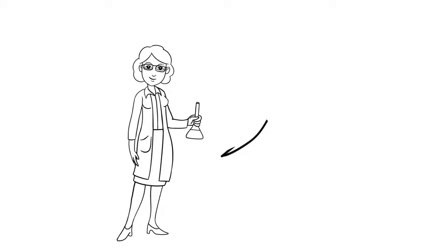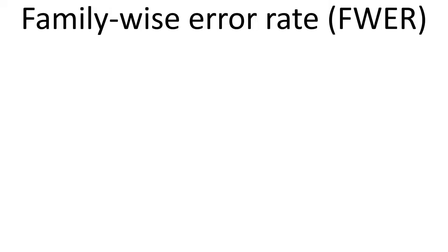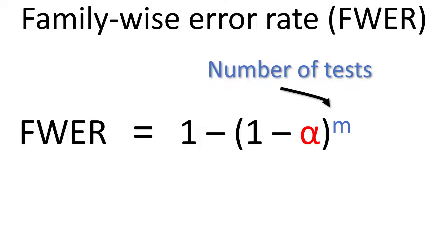Now we researchers and scientists usually start an experiment by stating our alpha level or significance level. Most of the time this is 0.05 and we usually perform an experiment that has a hypothesis. Based on this we can calculate the family-wise error rate by using this equation, where alpha is the alpha level and m is the number of tests or hypotheses being performed.